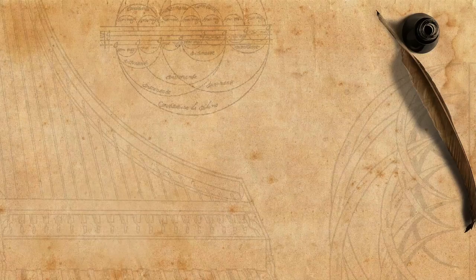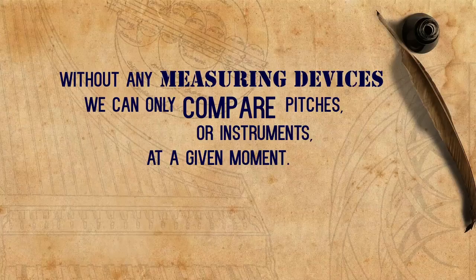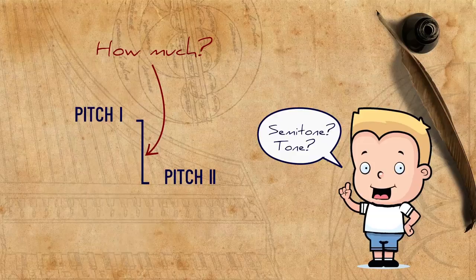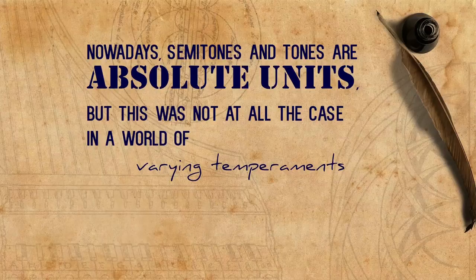Let's try to imagine a world in which there is no way to accurately measure and really discuss pitch. This was the case until the early 19th century. Without any measuring devices, we can only compare pitches or instruments at a given moment. We can say which one is higher or lower, but we cannot exactly say by how much. We can categorize the differences as semitones or tones, but this would be rather inaccurate. Nowadays semitones and tones are absolute units, but this was not at all the case in a world of varying temperament.